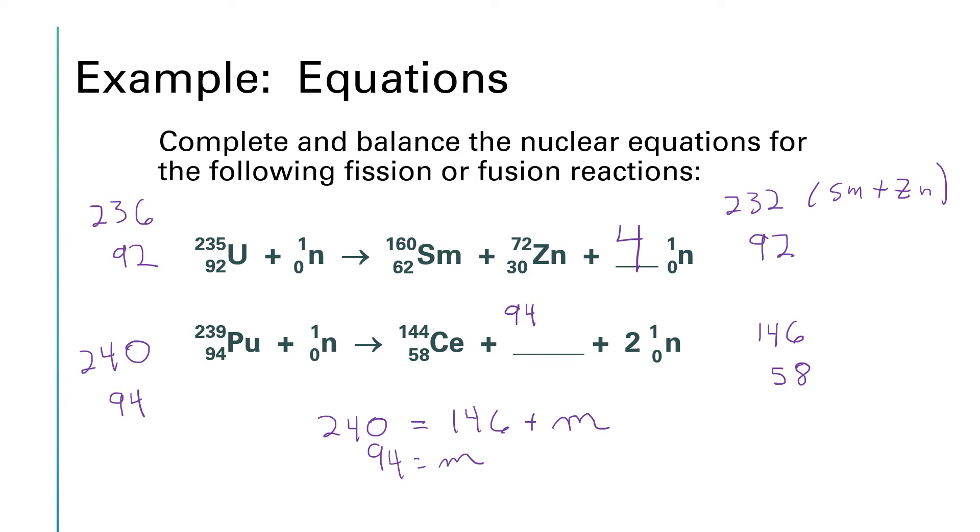So 94 will be the number I write up top, and then down on the bottom I've got that 94 equals 58 plus our missing atomic number. So if I take 94 minus 58, I get 36. So 36 is our missing atomic number. Now that I know that atomic number I can go and look at the periodic table, and the element with atomic number 36 according to the periodic table is krypton. So that's our missing piece.